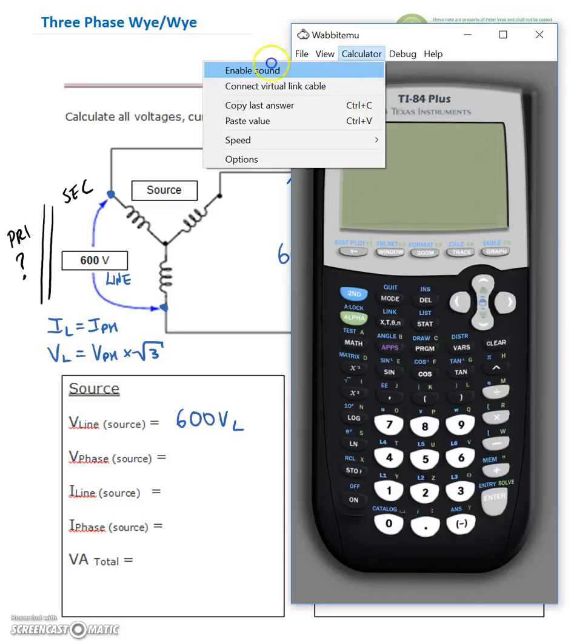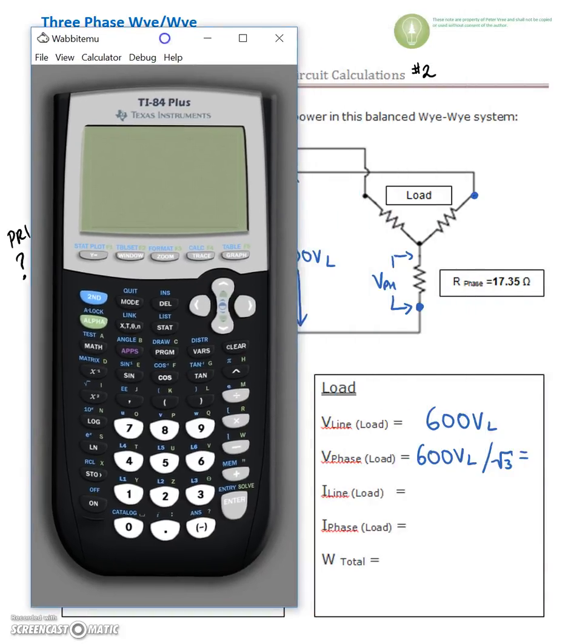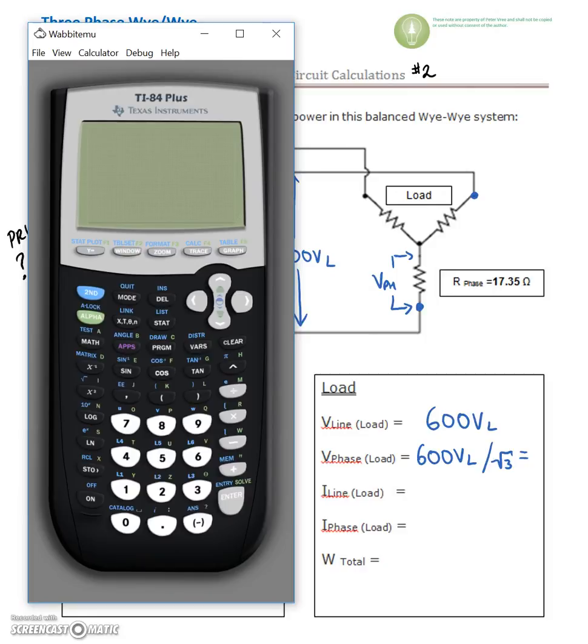Let's just bring this across. So we've got 600 volts divided by the square root of 3, or 1.732, and that gives us 346.4. I'm going to go with standard voltages, so I'm going to round that up to 347 volts.